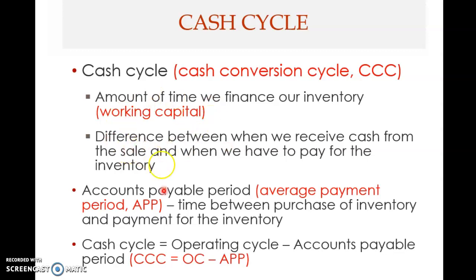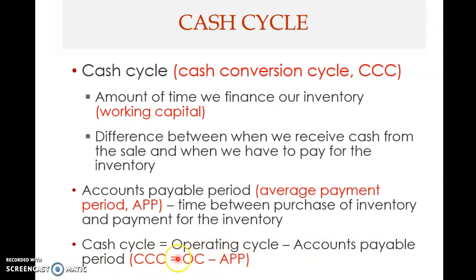The cash cycle includes another component period: the accounts payable period, sometimes called the payable period or average payment period (APP). This is the time between the purchase of inventory and the payment for that inventory. The cash conversion cycle formula is: CCC = OC − APP — the operating cycle minus the accounts payable period.